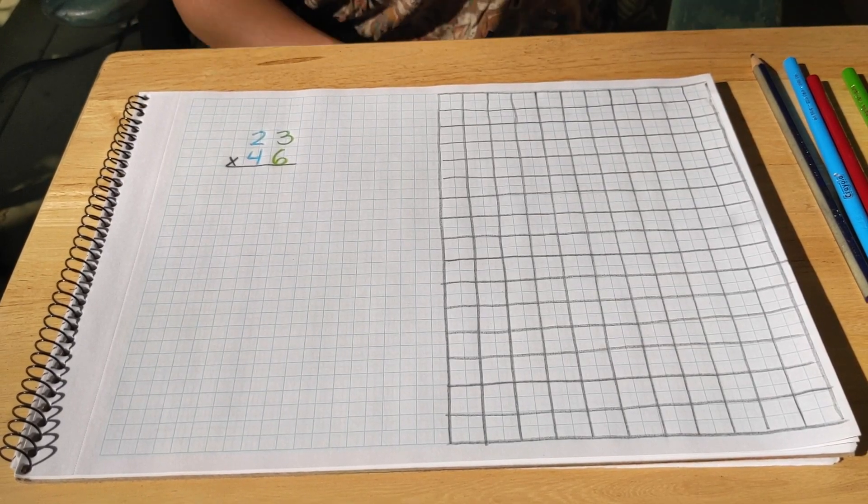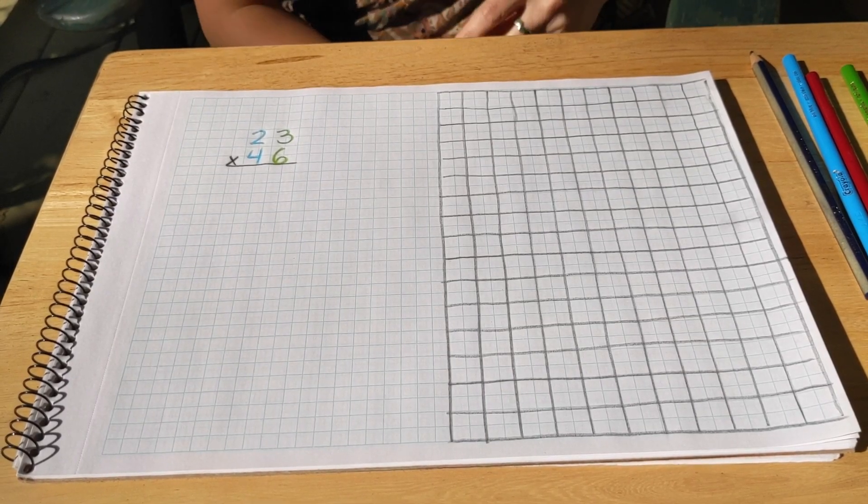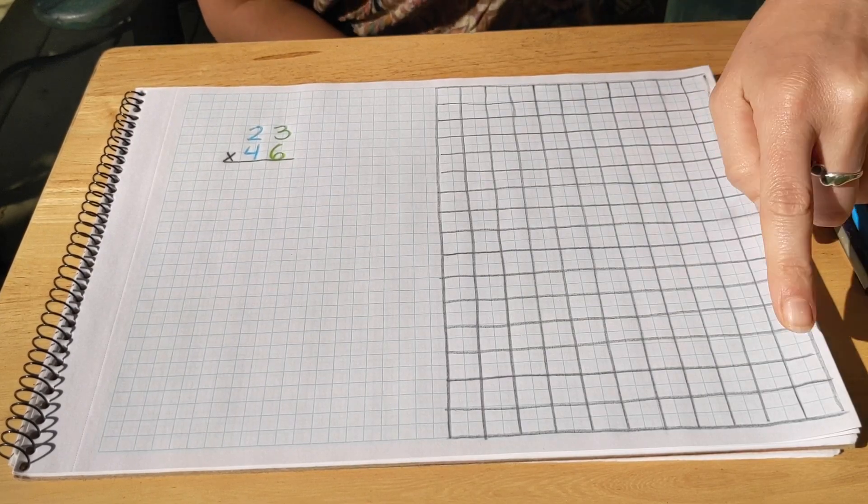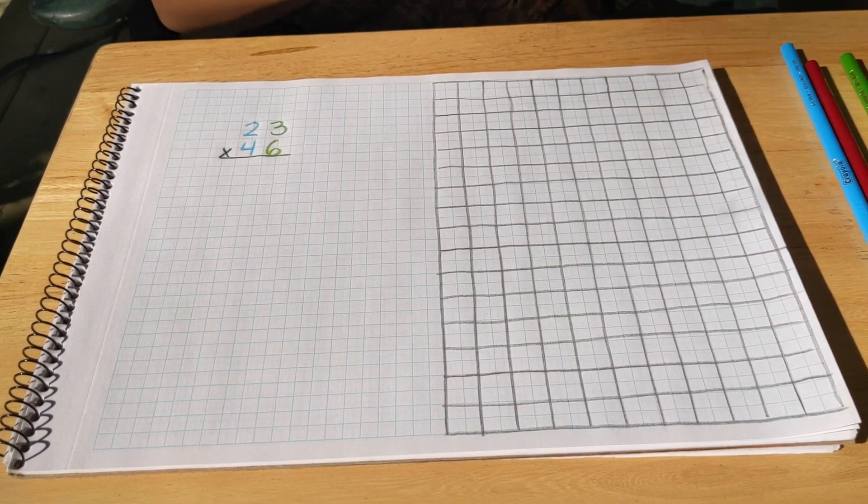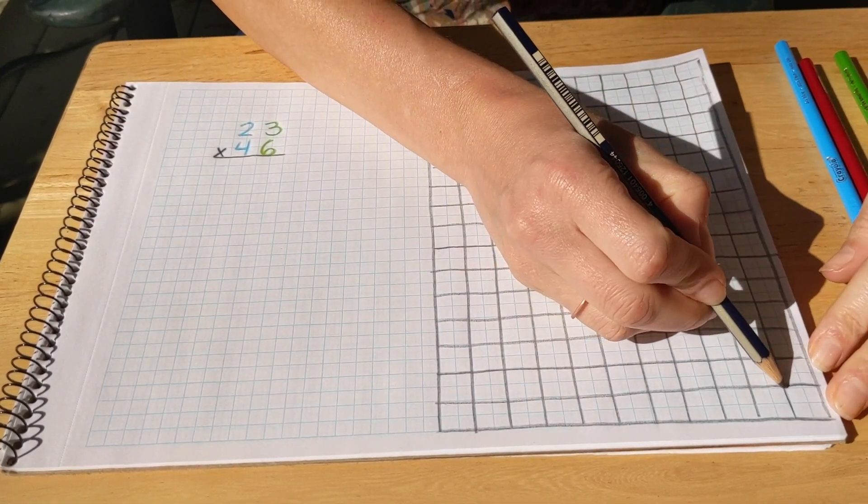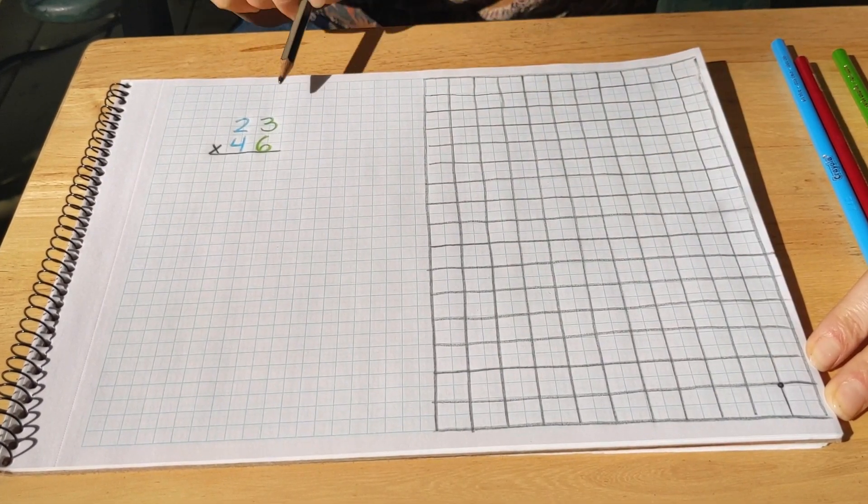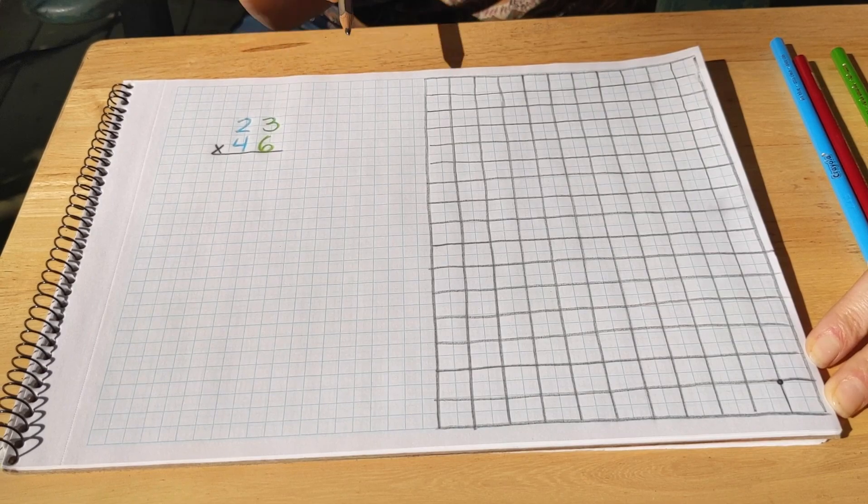So the first thing we're going to do is mark out 23 on our paper. Just like with the checkerboard, we're going to put that number along the bottom here. I'm going to first draw a dot right here. And then we're going to count out our units. So for 23, how many units do we have? We have three.